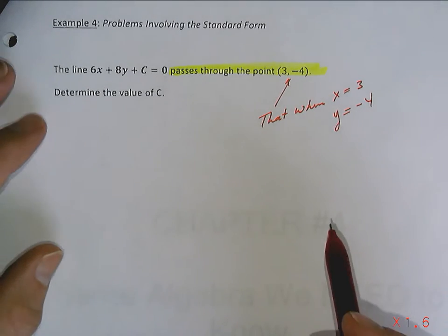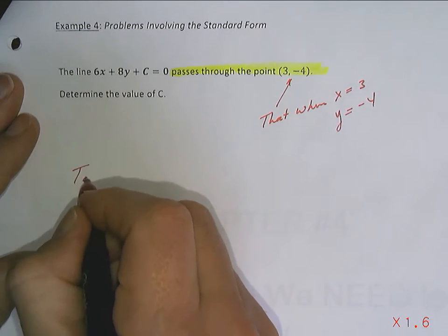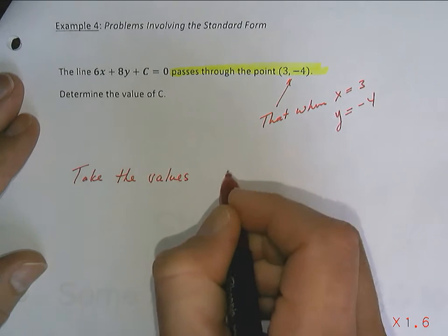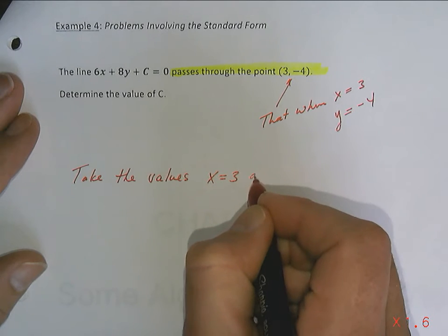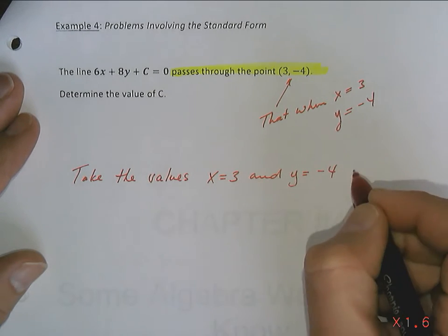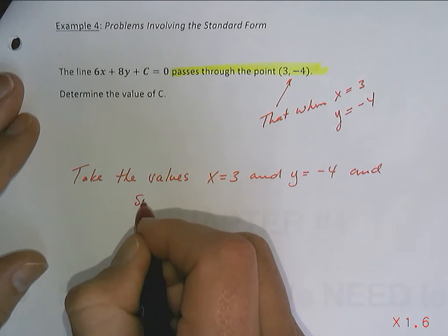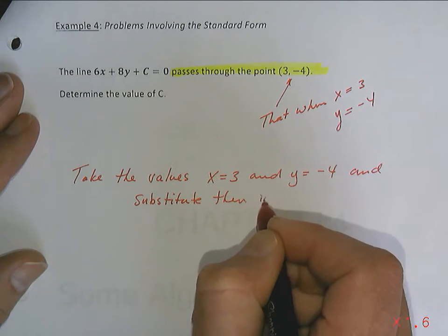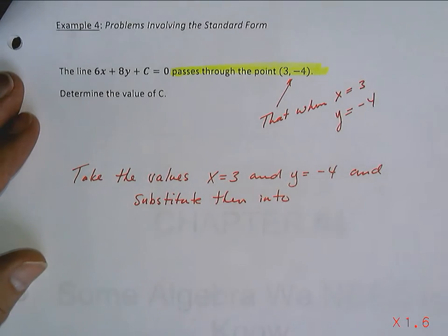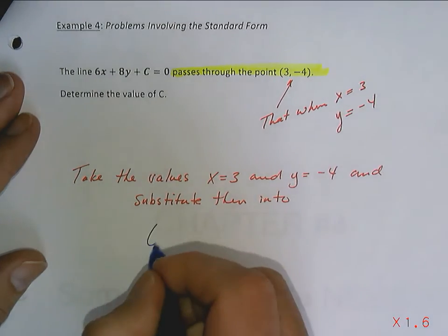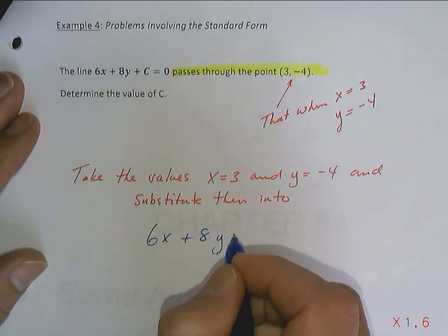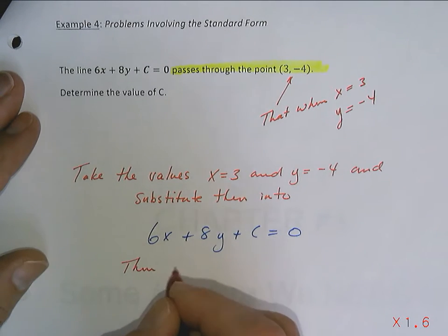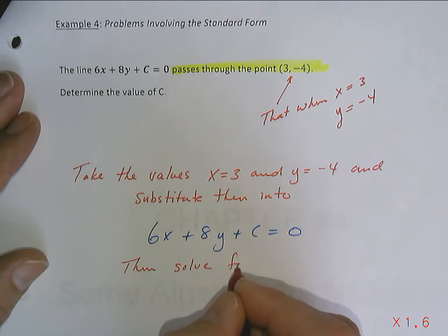So what that means is that I'm going to take the values x equals 3 and y equals negative 4 and substitute them into this equation, 6x plus 8y plus c equals 0. And then you're going to solve for c.